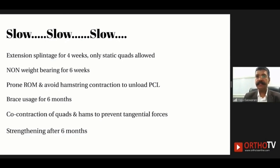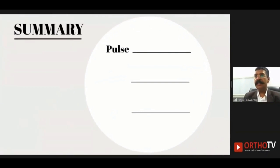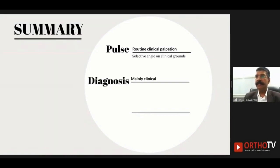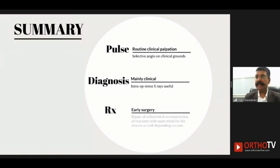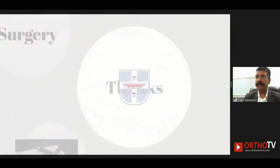Strengthening exercises begin after 6 months, with return to sports roughly at one year. To summarize: assess pulse and perform routine clinical palpation, with angiography on selective grounds. Diagnosis relies mainly on clinical assessment, with intraoperative stress X-rays as a useful adjunct. Surgery is the preferred method of management early on — repair collaterals and reconstruct cruciates, keeping an open mind about performing these procedures through open surgery as well.